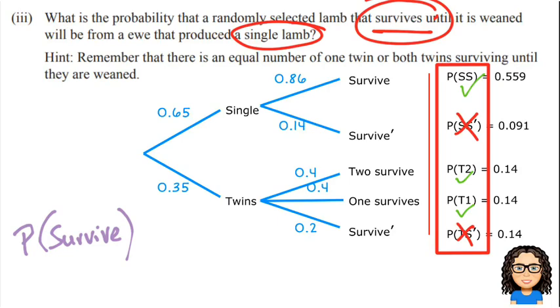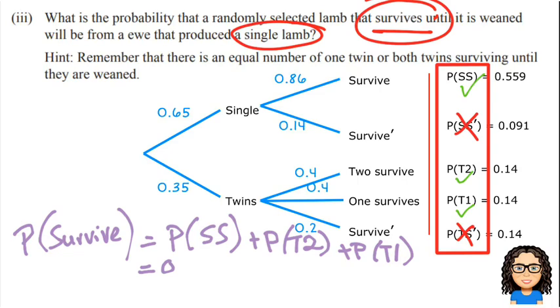So I'm going to look at those 3 combinations and add those together to find my total. So the probability could be a single lamb surviving, or a twin where 2 survive, or a twin where 1 survives. So I'm going to add 0.559, plus 0.14, plus 0.14, and that gives us a probability of 0.979.